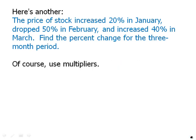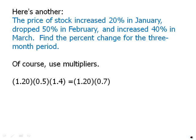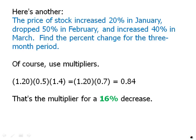Again, we use multipliers. The multiplier for a 20% increase is 1.2; for a 50% decline, 0.5; for a 40% increase, 1.4. Multiplying those three together: first, 0.5 × 1.4 = 0.7, then 0.7 × 1.2 = 0.84. A multiplier of 0.84 represents a 16% decrease. So for the first quarter of the year, the stock decreased 16%.